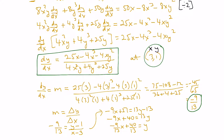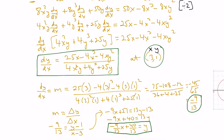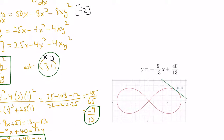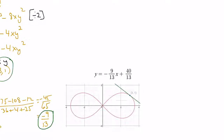There's our equation of the tangent line at the point (3,1). Looking at the curve again in Desmos, we can see the tangent line right there, given by this equation. It touches the curve at (3,1), so it looks like we've got the right answer.